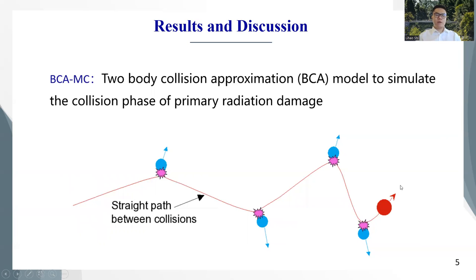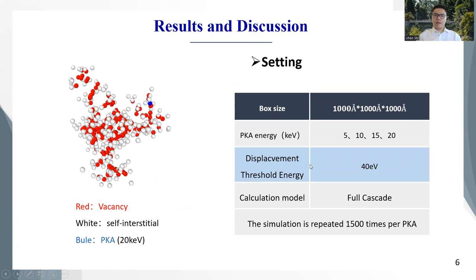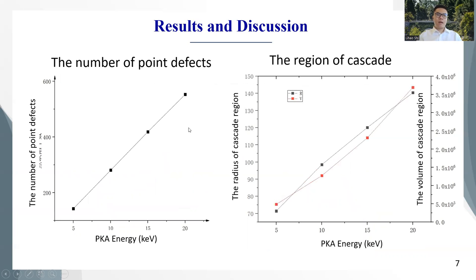In the first part, the collision phase of the primary radiation damage is simulated by the BCA and MC method. This is the setting information of my simulation. I use four different PKA energies, and every PKA energy is simulated 1500 times. The number of point defects are calculated and the region of cascade is simulated.